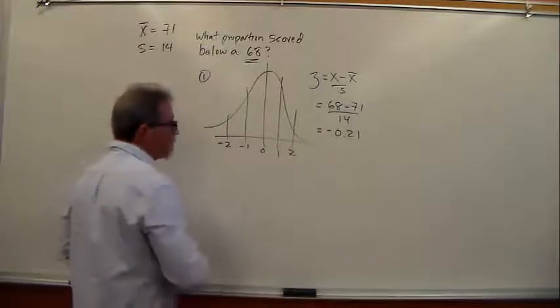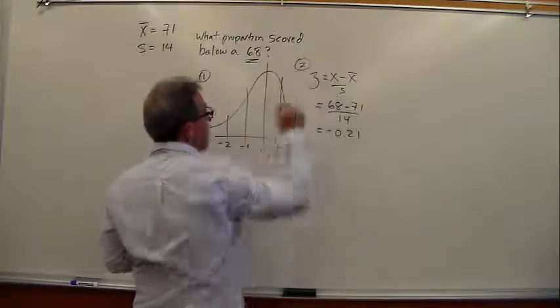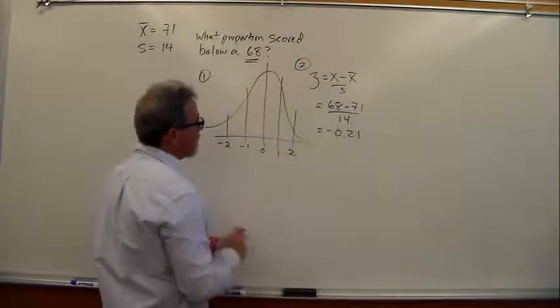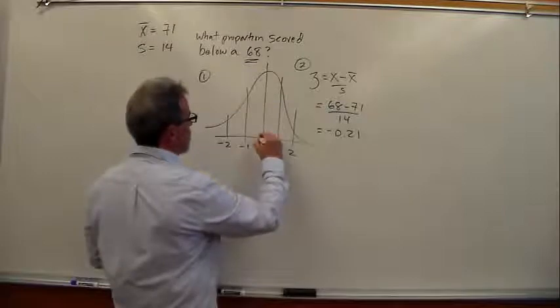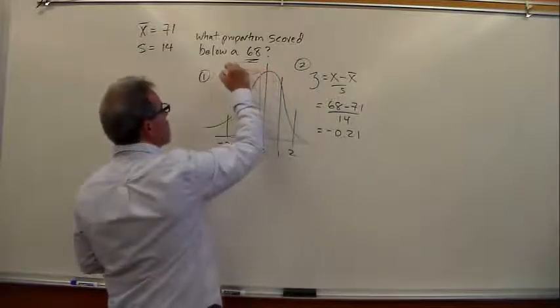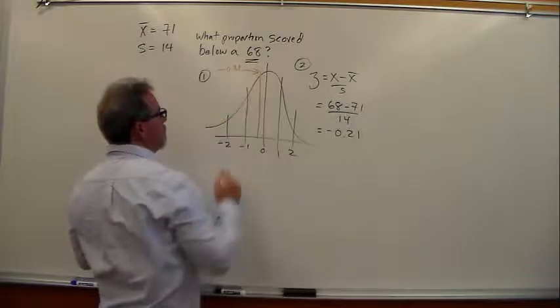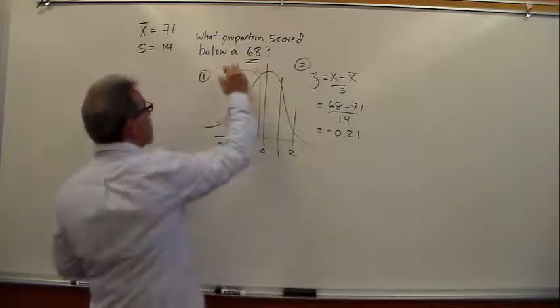Step three, put this right up here first. Step three is place it on the graph. Negative 0.21, well that's going to be about there I guess. Negative 0.21. That is step three.